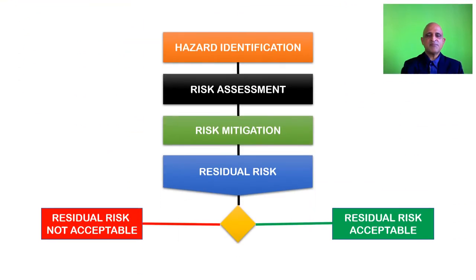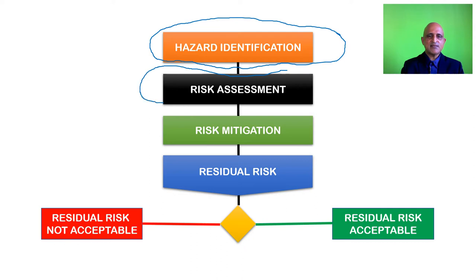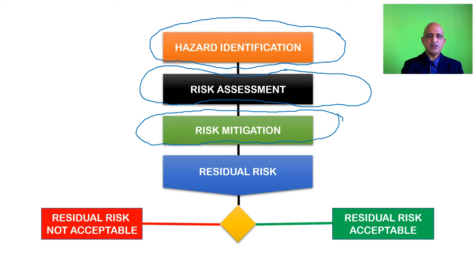Let us look back briefly on the description of the flow. We commence with hazard identification — we identify the hazards. We then conduct a risk assessment and categorize our biological agent into the respective risk group. We also conduct a risk assessment using a risk matrix as was discussed earlier. We then move on to risk mitigation, and this is where the controls come into the picture.